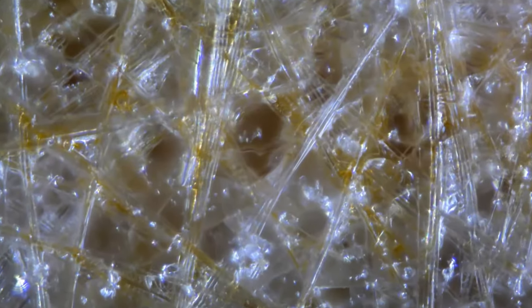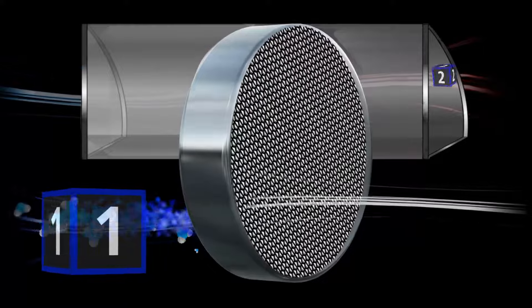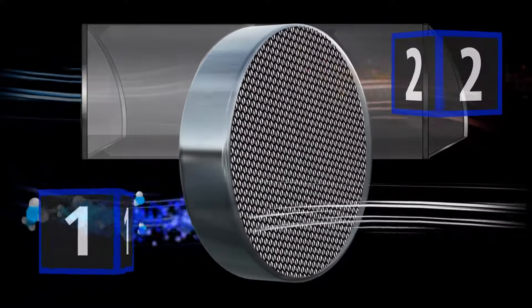The desiccant adsorbs, or holds, or takes the moisture out of the airstream that we want to dry, that first airstream. In the second airstream, the moisture is being liberated to the atmosphere.